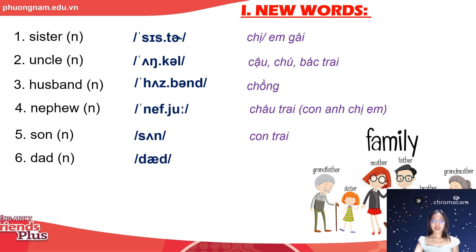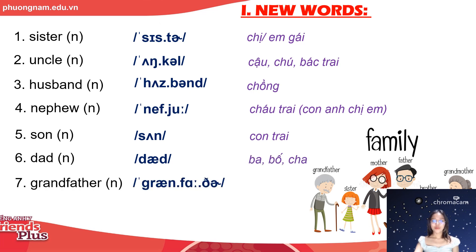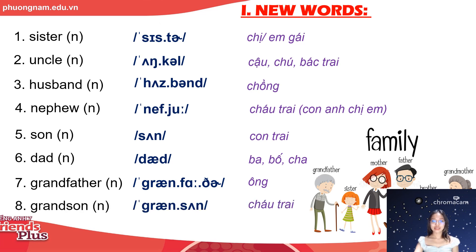Number six: dad — ba, bố hoặc là cha. Number seven: grandfather — ông in Vietnamese. And the last one is grandson — cháu trai. I think these words are not very new for many of you taking this class, because we use them so often in our speaking English on a daily basis. So it will not take much time for you to get familiarized and memorize them.